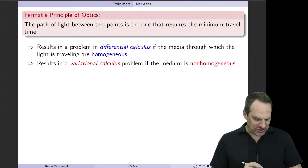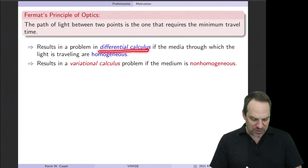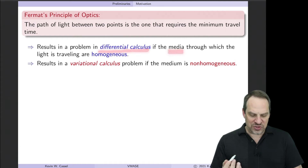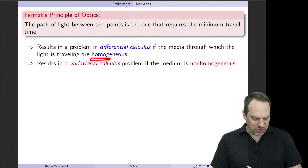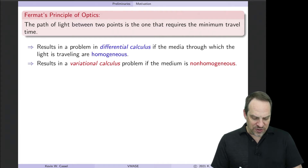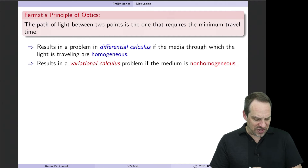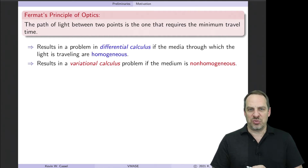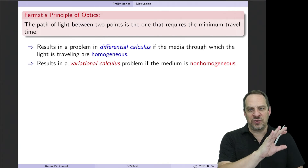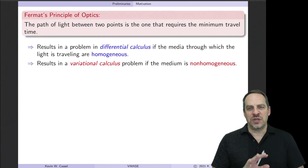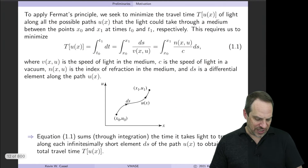What happens here is that expressing Fermat's principle results in a differential calculus problem if the media through which the light is traveling are homogeneous — they don't change over space. However, if the media is non-homogeneous and does change over x, y, and z, then we have to use a variational calculus approach. So the same physics, in one case, leads to a differential problem, and in the other case leads to a variational calculus problem.